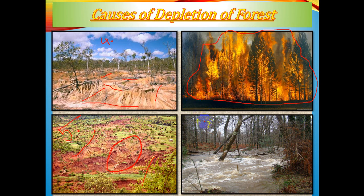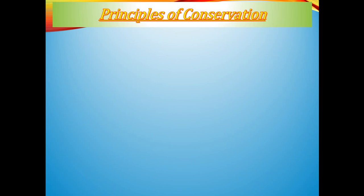Another natural disaster cause is excessive floods, where roots cannot hold trees firmly, causing damage to forest cover. These are the main causes of forest depletion. Our next step is the ways of conservation — but first, the principles explaining why we should conserve forests.